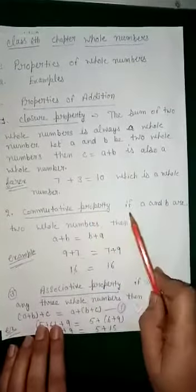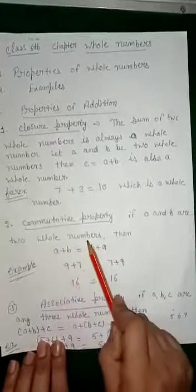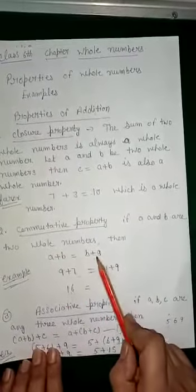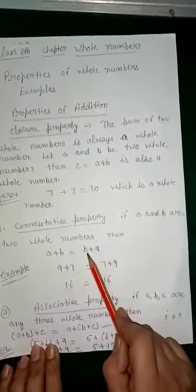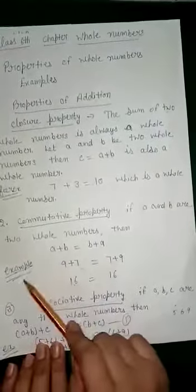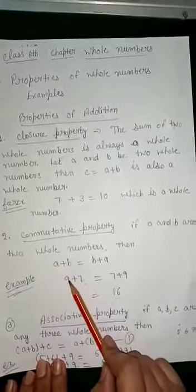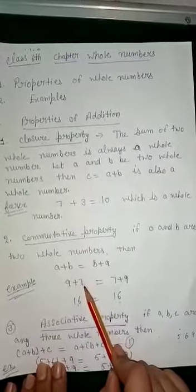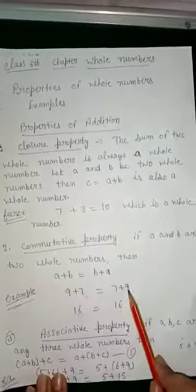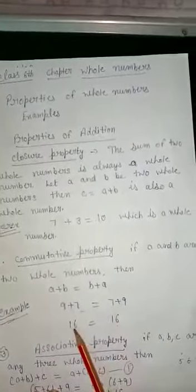The second property is the commutative property. If a and b are two whole numbers, then a + b = b + a. Here we change the order: a + b becomes b + a. For example, 9 + 7 = 7 + 9. Here a = 9 and b = 7. Nine plus seven equals 16, and seven plus nine equals 16. Left-hand side equals right-hand side, and 16 is a whole number.